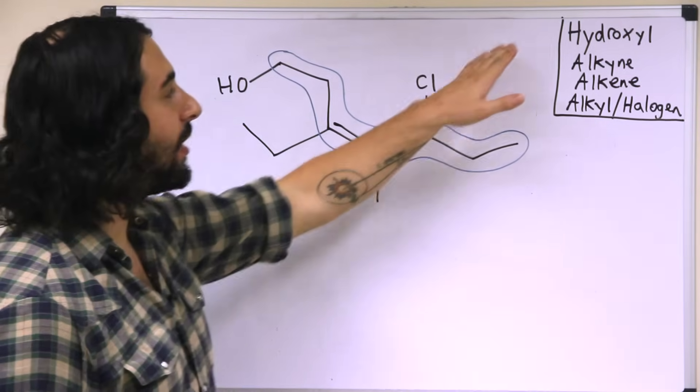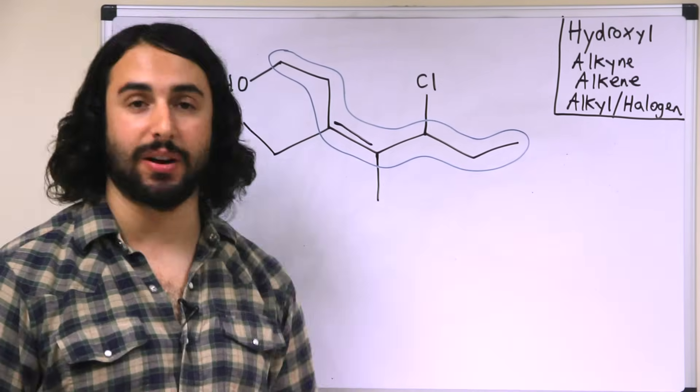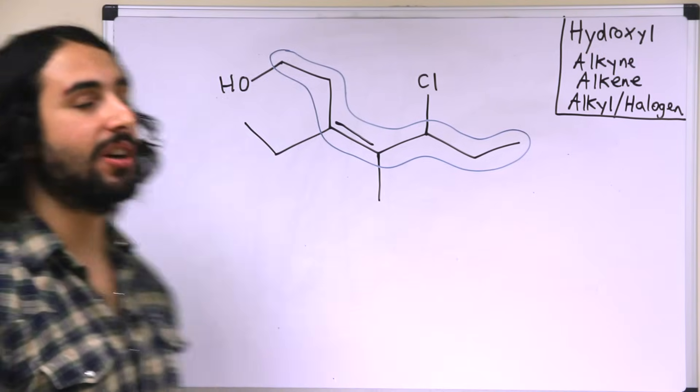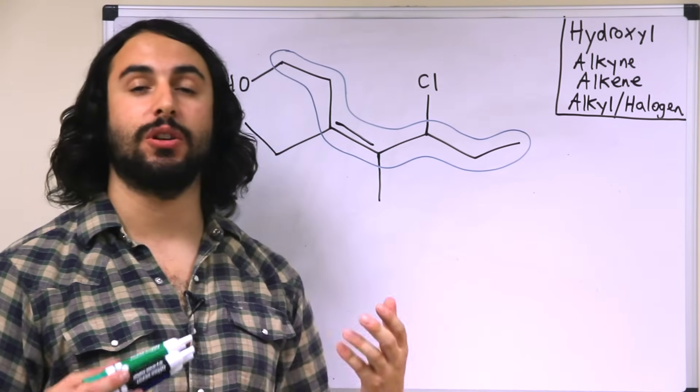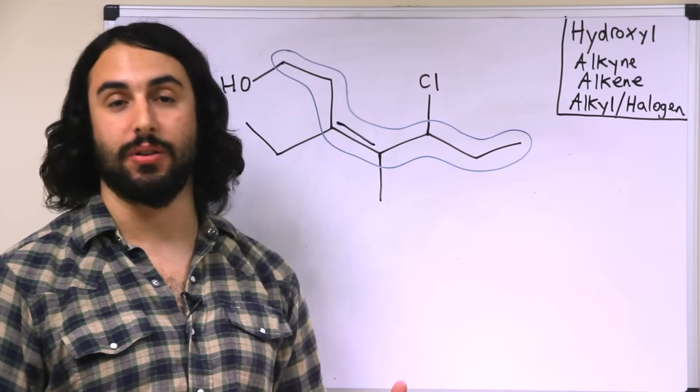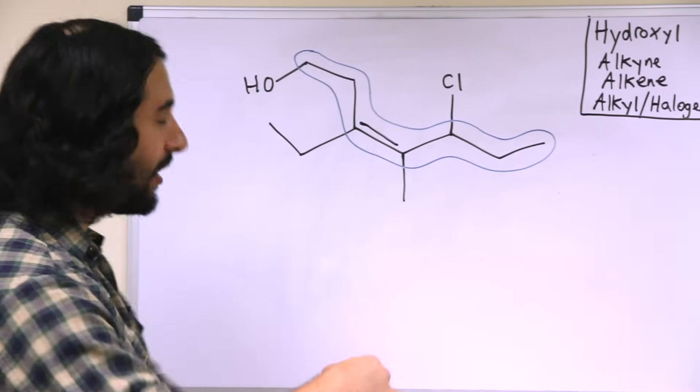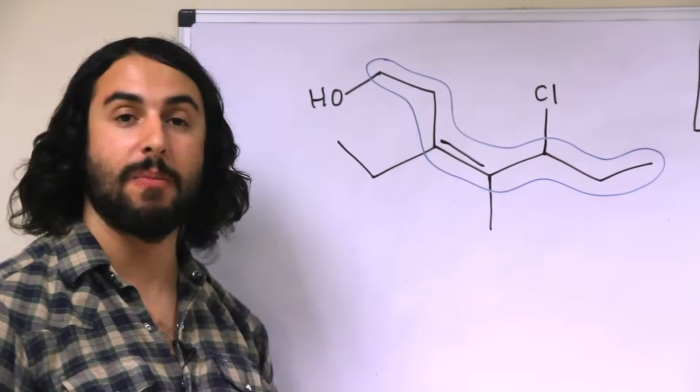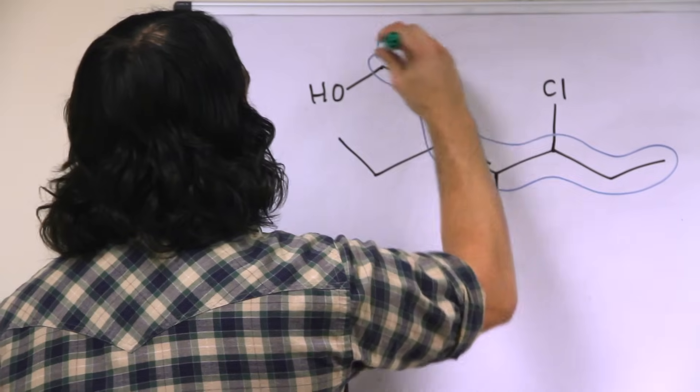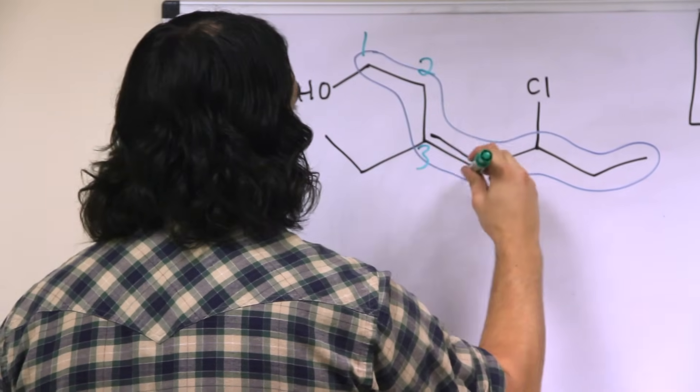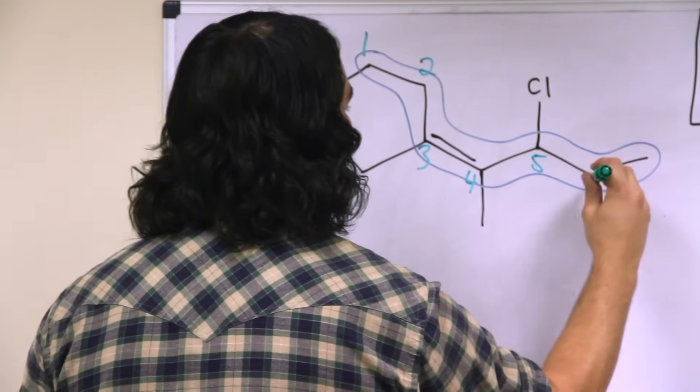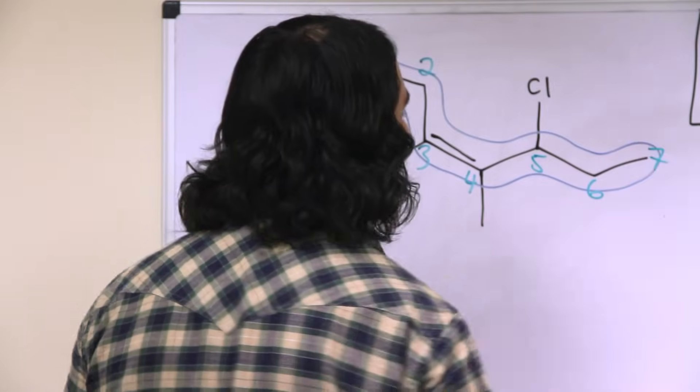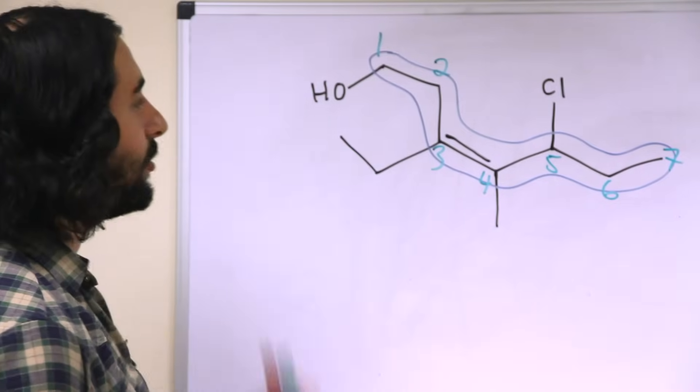So in this case, because hydroxyl takes the highest priority, it is the location of the hydroxyl group that is going to determine the direction that we number this parent chain in. So because the hydroxyl is over here, we must number this left to right. So we have a seven carbon chain with the hydroxyl on carbon one.